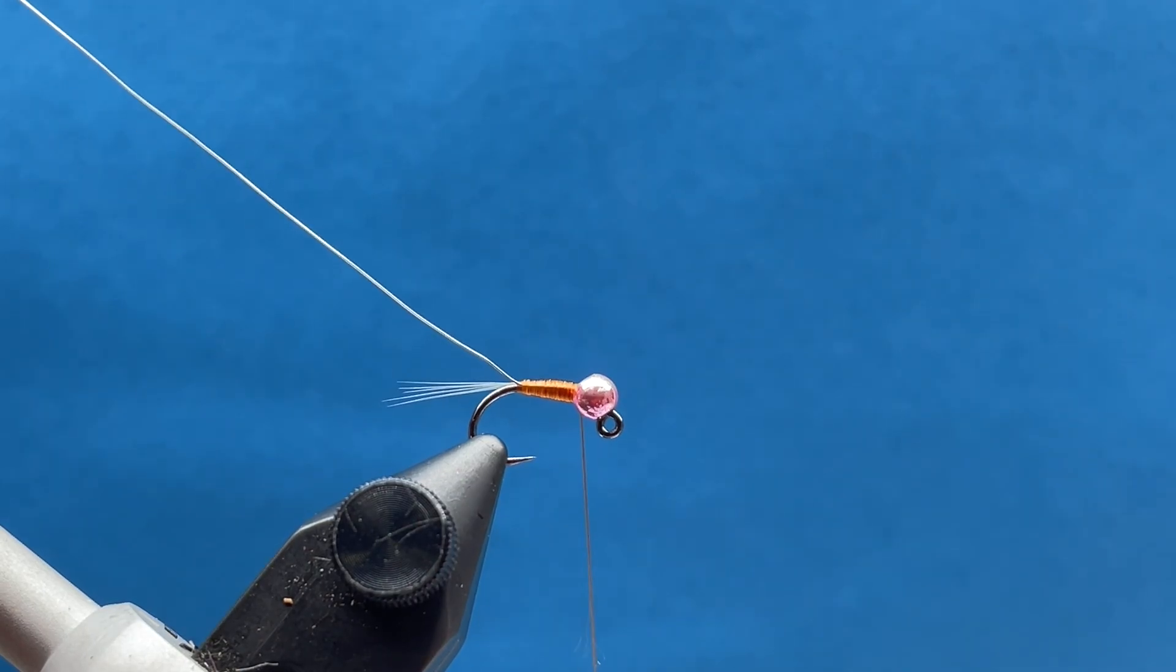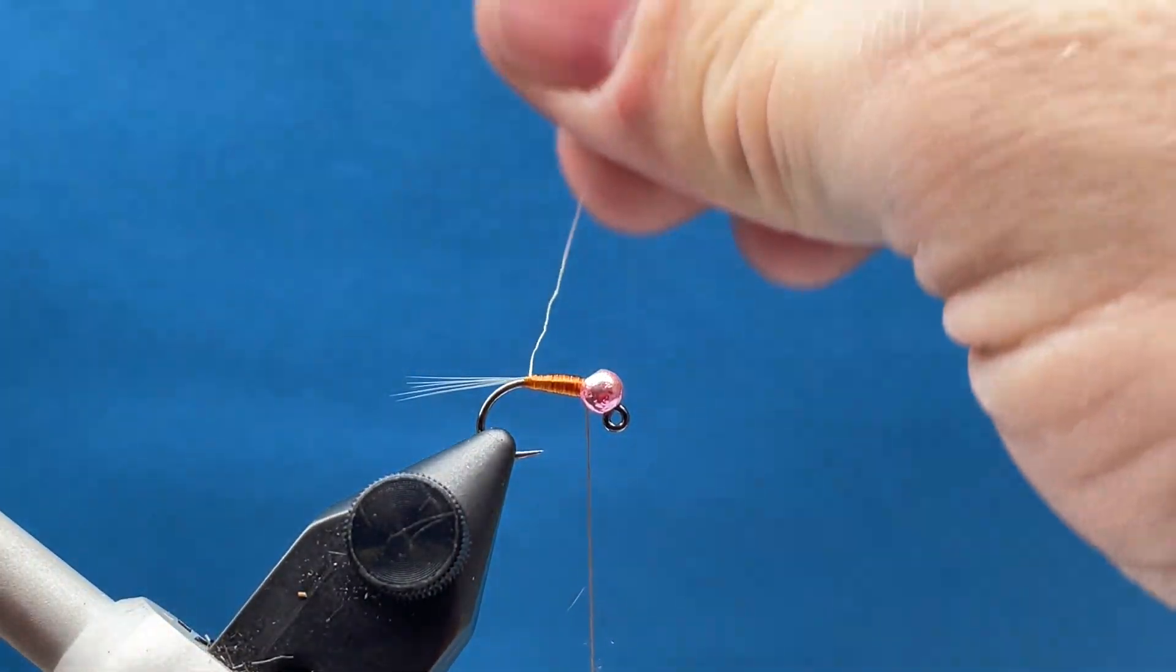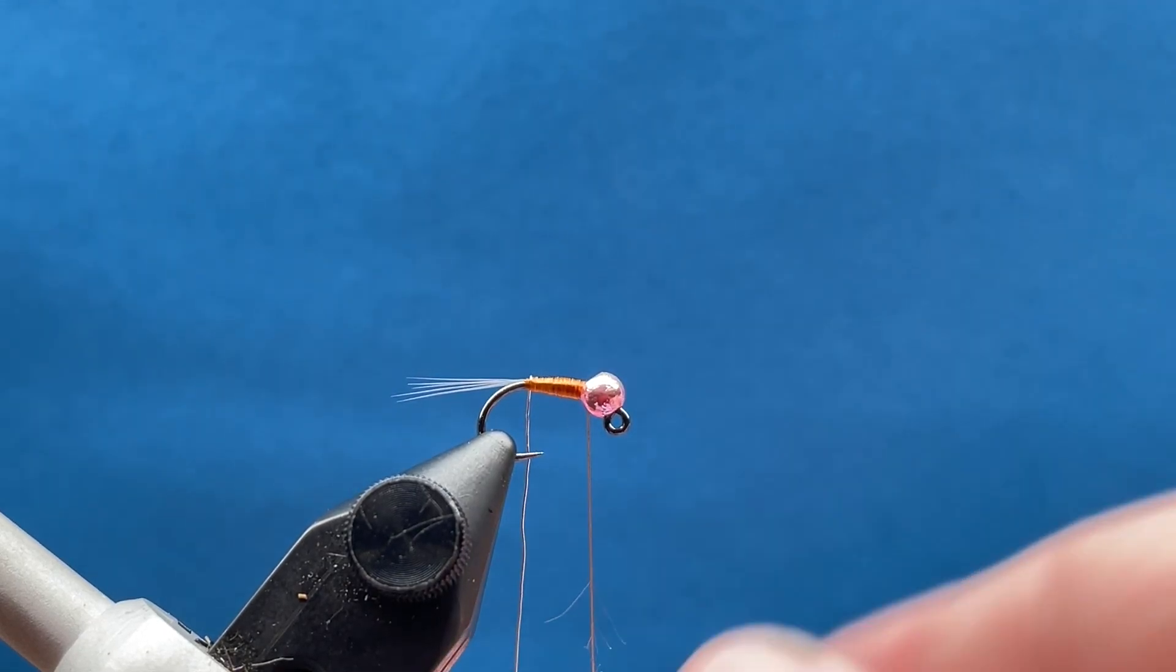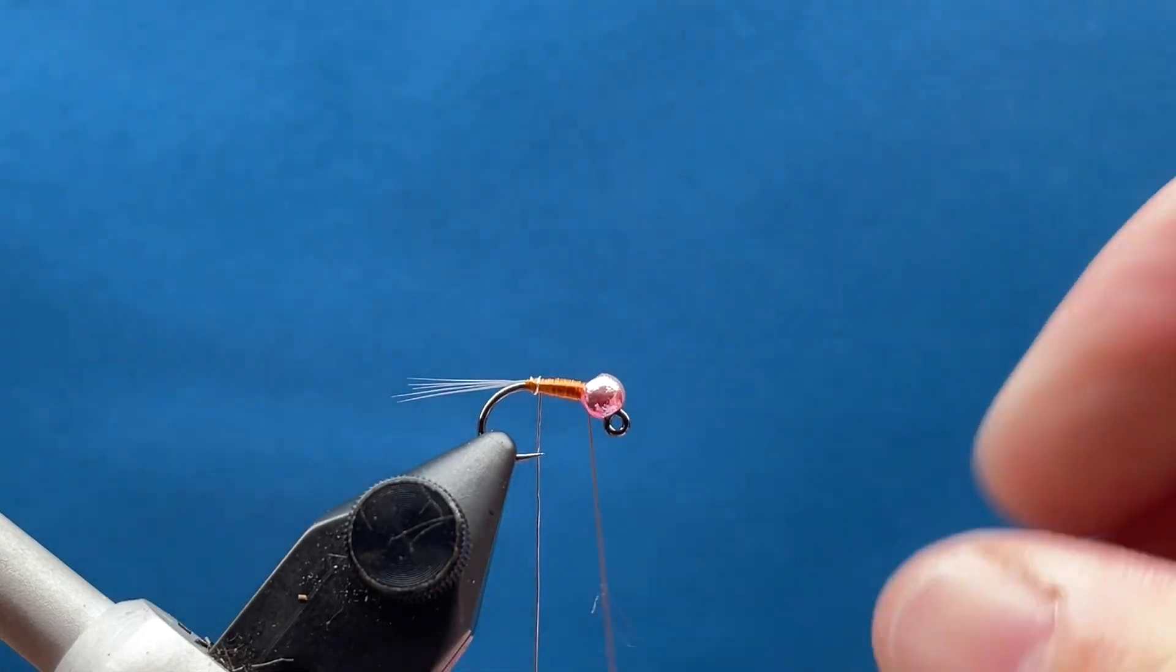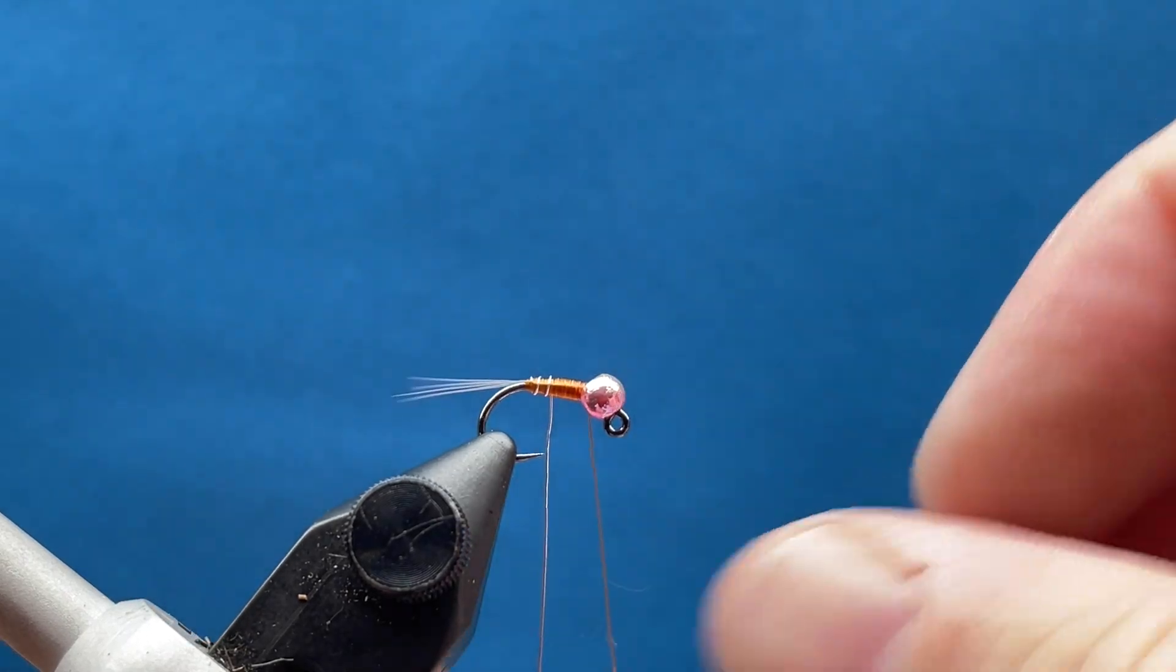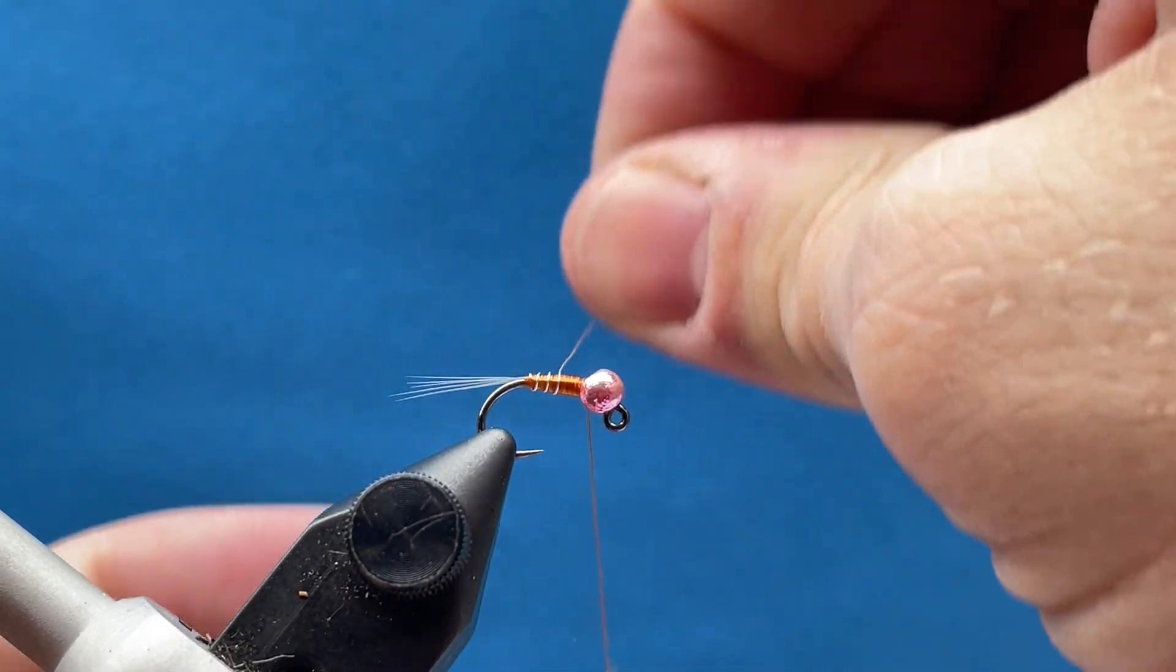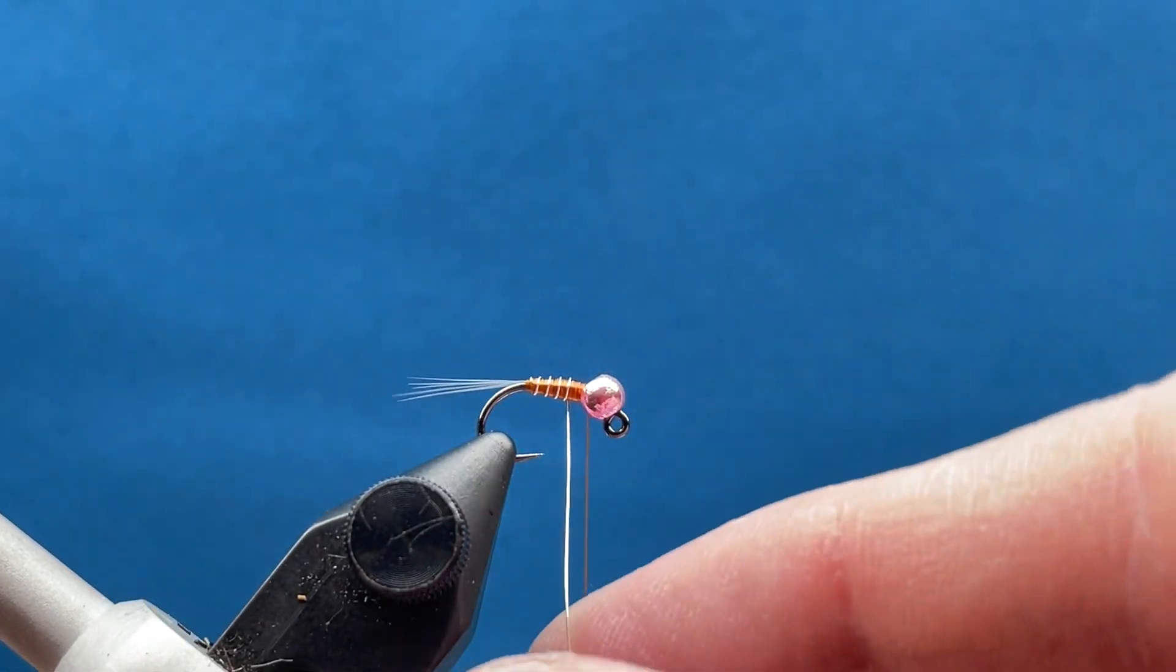Now I'm going to bring this wire forward, and I just like to bring this forward with even segmented wraps. You can really space these however you'd like. I kind of try to keep them fairly close, just gives a nice segmentation look to it. Just try to keep them even as I go. We just work our way up here towards the bead.